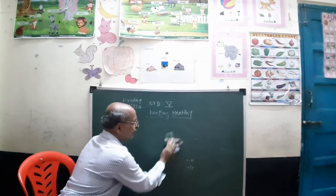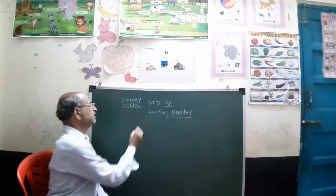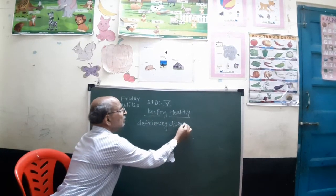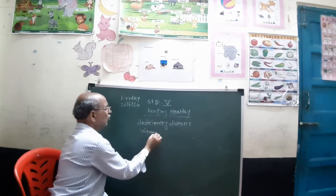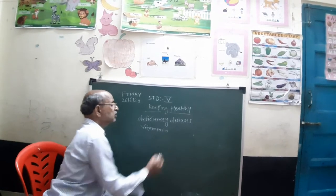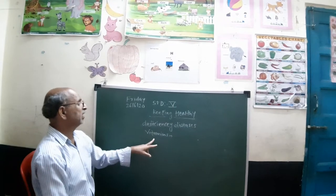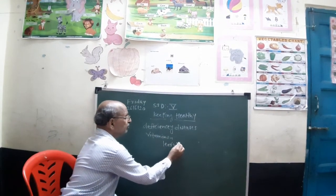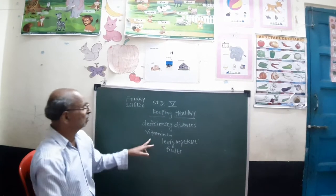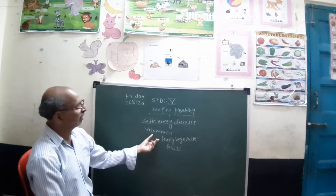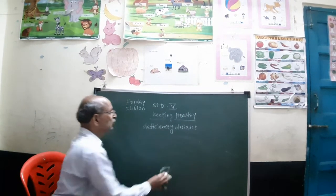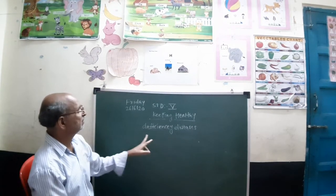Next, we see deficiency diseases. Vitamins are required for our proper health and proper growth. They also help us to fight against disease. We generally get vitamins from leafy vegetables and from fruits. If we do not get enough of a certain vitamin and have a shortage of it, then we suffer from what is called a deficiency disease.